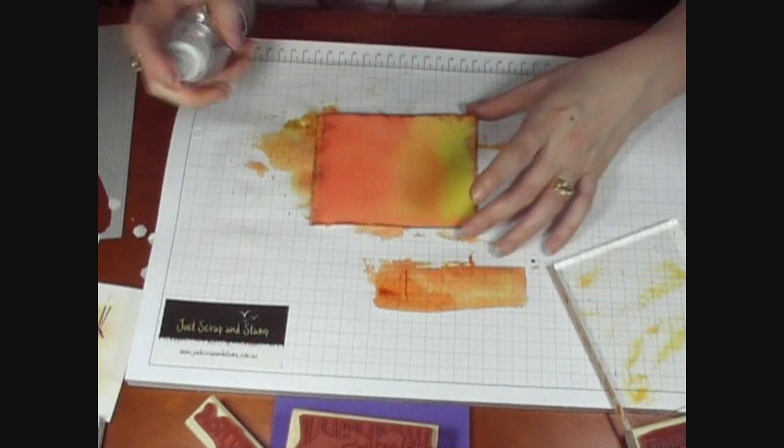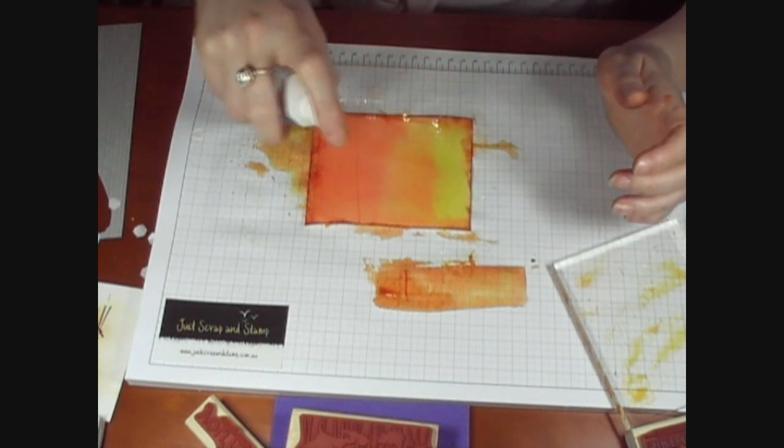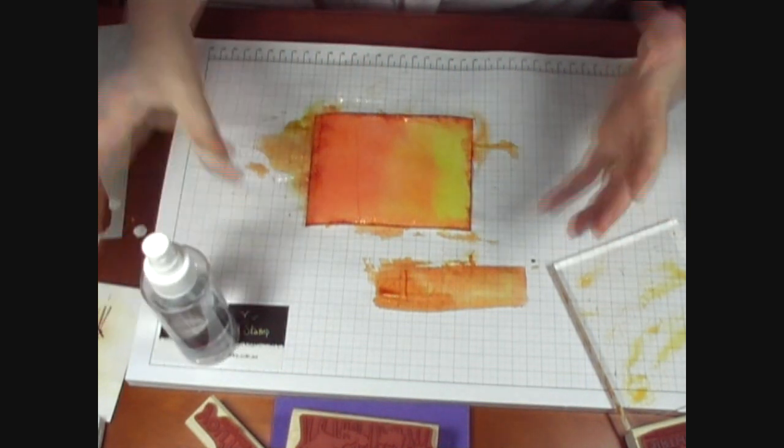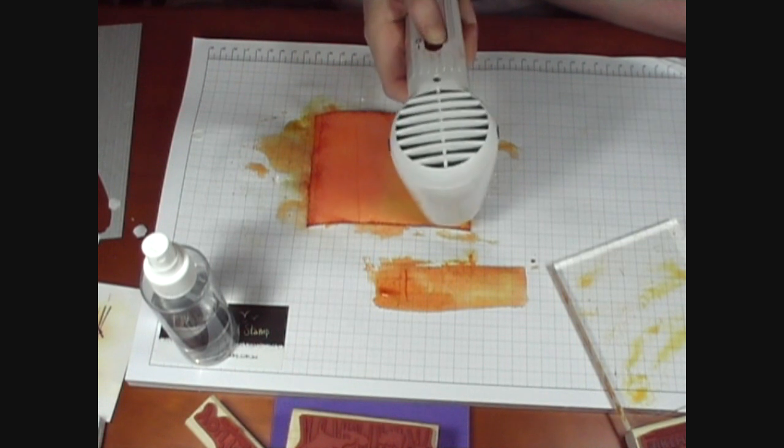Then once again we're going to take our spray bottle and just mist over those edges just so that that ink blends into the coloring as well. So we'll just heat that up with our heat tool again and dry that out.